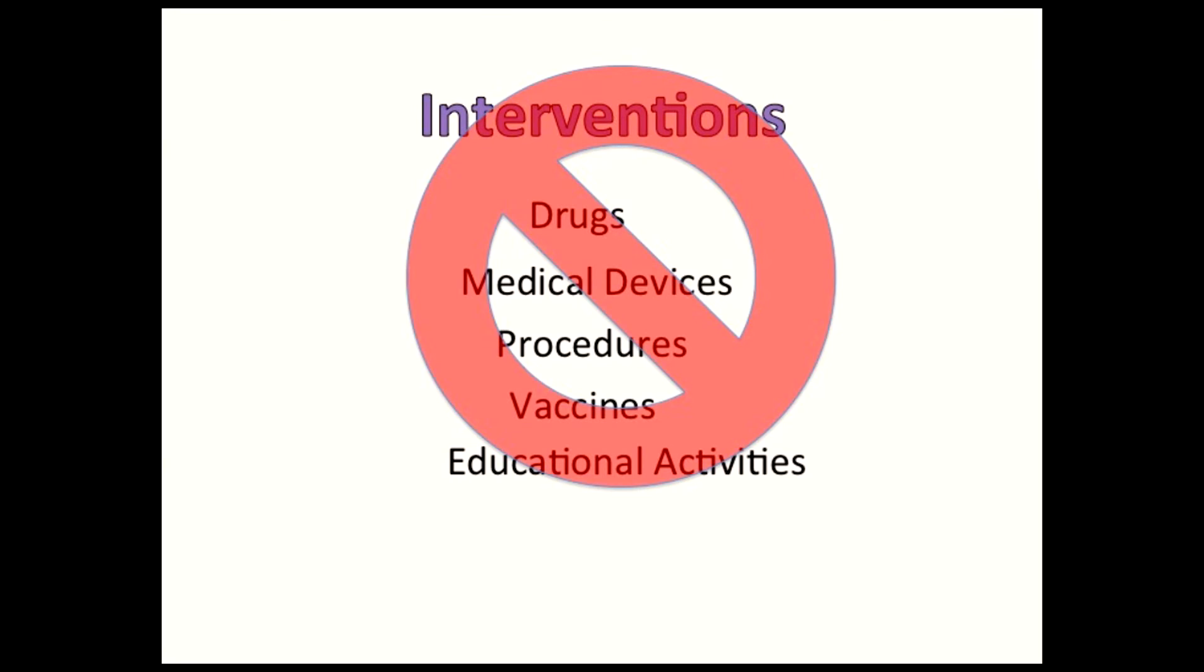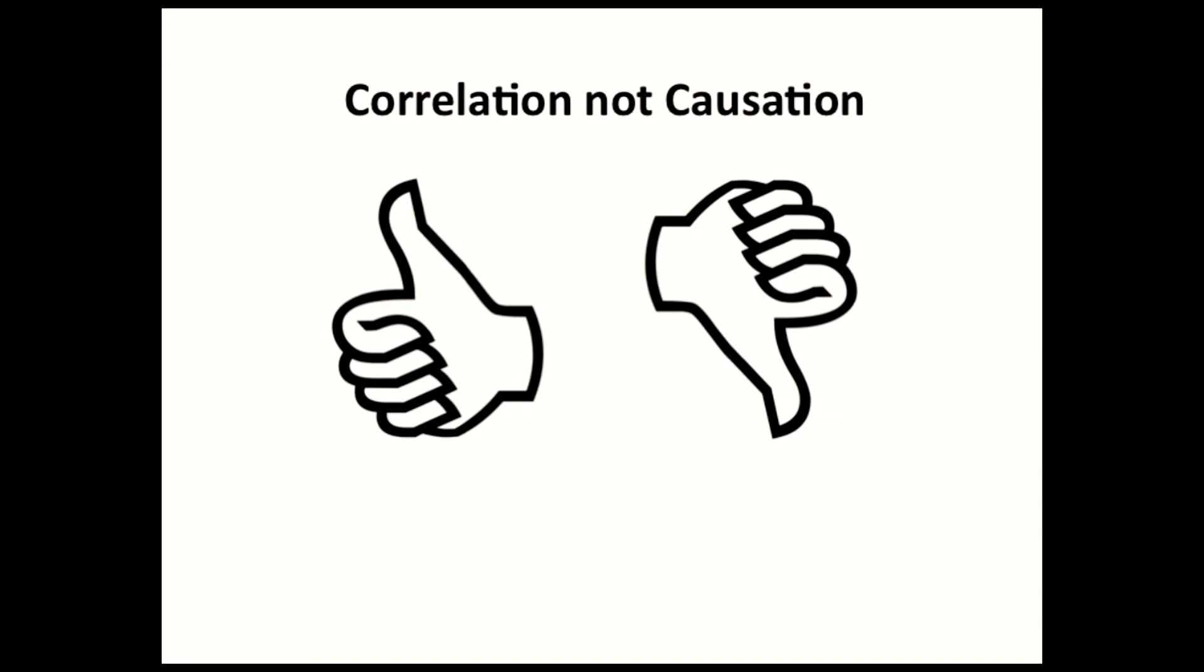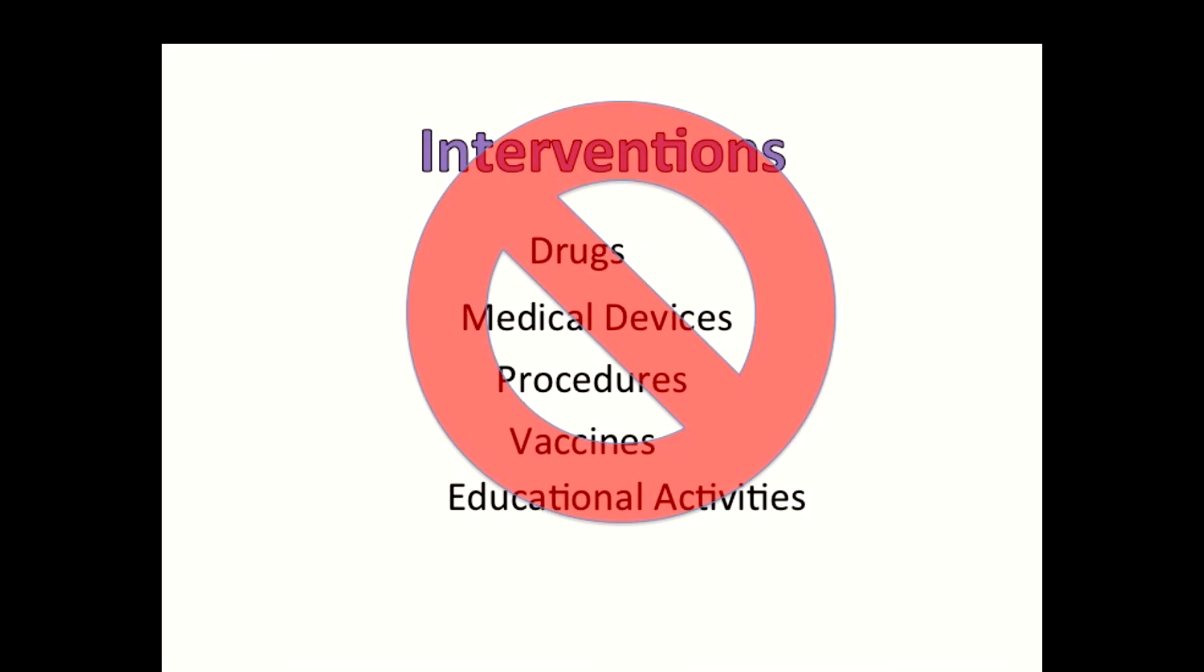If there is not an intervention, then the study falls into categories of observational or epidemiological studies. These types of studies can identify correlations between human health and different factors. Epidemiological studies don't intervene with people's lives.